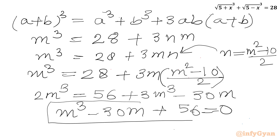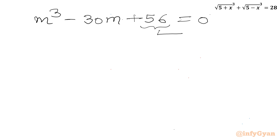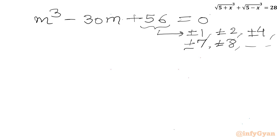This is our cubic equation. Let us solve it using the factorization method and rational root theorem. The eligible factors of 56 are plus or minus 1, 2, 4, 7, 8, and so on, with leading coefficient plus or minus 1.